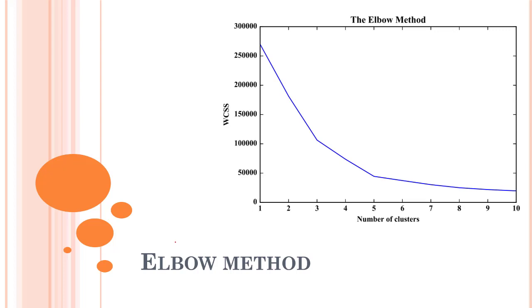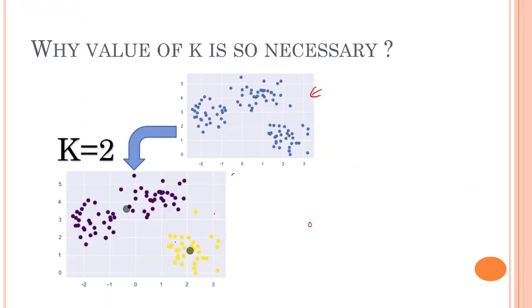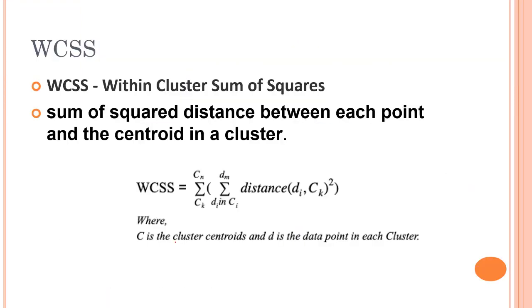This method uses the concept of WCSS value. The full form of WCSS is within cluster sum of squares, which defines the total variation within a cluster. So what we do is we calculate the WCSS for each and every k value for a range, let's say a range of five to fifteen clusters. And for each value of k, we try to find out the WCSS value, which is the total variation within the clusters.